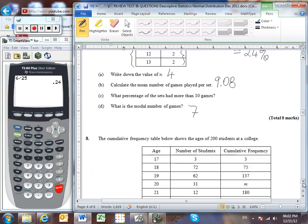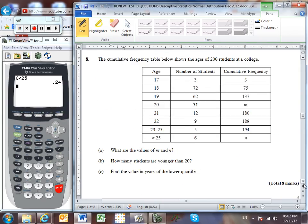Onwards now to question number 8. Here's a cumulative frequency table with the ages of 200 students at a college. Now remember that cumulative frequency represents the sum so far. So, so far we've got 3 students. Now we've got 3 plus 72 students. So far we've got a total of 75. Then 3 plus 72 plus 62 is 137. So if we add another 31, we should end up with the M value. Whichever way you do it, we know that the value of M is going to be the sum of all of our different numbers of students so far. And that's going to give us an answer of 168.